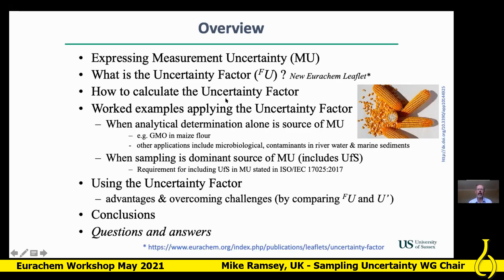I'm then going to talk about how to calculate the uncertainty factor and then two worked examples: one which is a purely analytical component — GMO in maize flour — and other analytical applications including microbiological, biological, and contaminants in water and sediments. A second example will cover uncertainty that includes uncertainty from the sampling process, which is now in ISO guide 17025. Then I'll discuss advantages and challenges of the uncertainty factor, comparing it with relative uncertainty, followed by conclusions and questions.